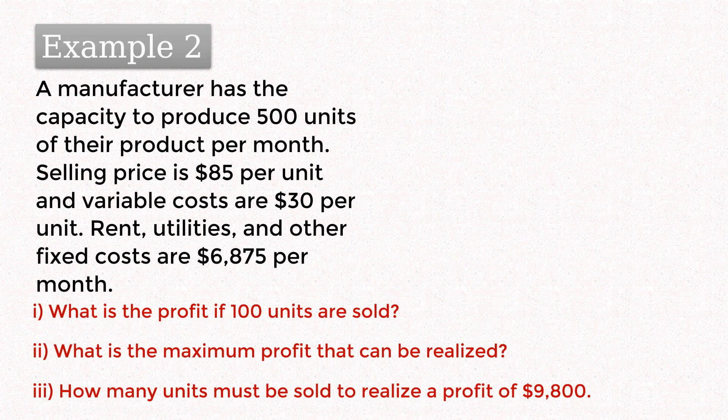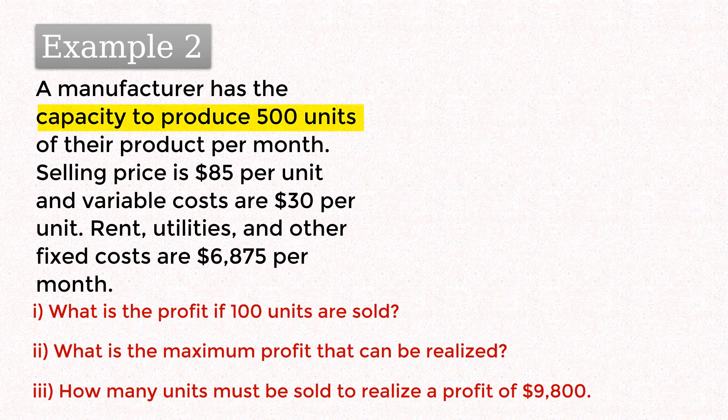In the next example, we'll solve a profit-related problem. A manufacturer has the capacity to produce 500 units of their product per month. Selling price is $85 per unit and that makes the total revenue function 85x.